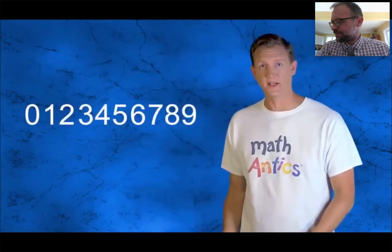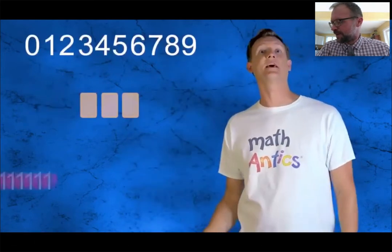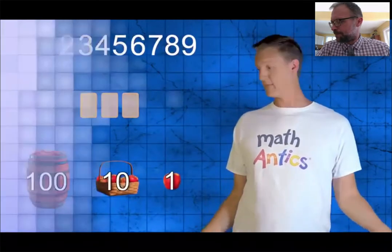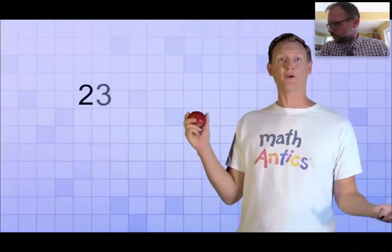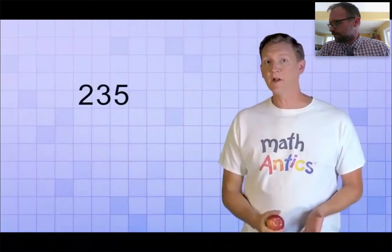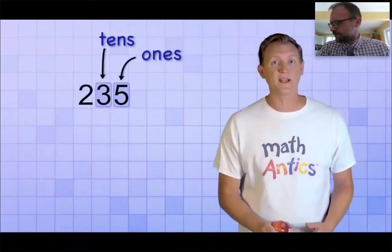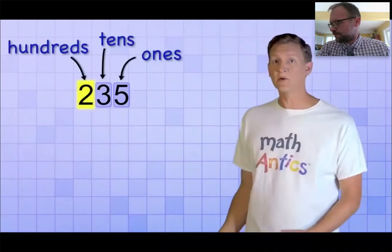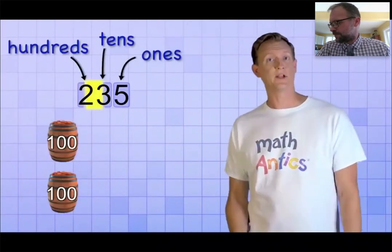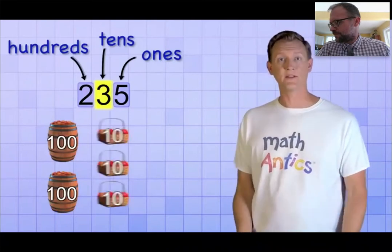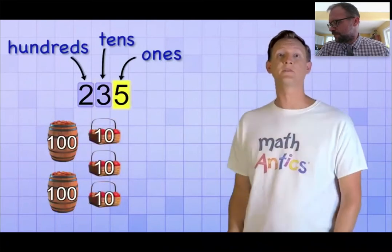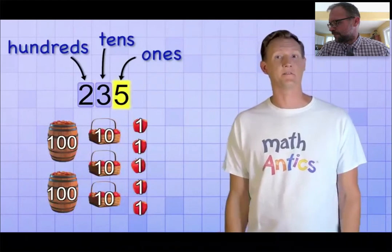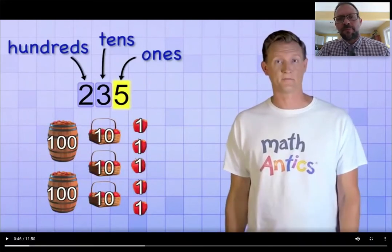In a previous video, we learned how to count using just ten different digits and number places that represent different sized groups. For example, if we needed to count 235 apples, we use different number places for counting by ones, by groups of ten, and by groups of a hundred. The digit two in the hundreds place represents two hundreds. The three in the tens place represents three tens, or 30. And the five in the ones place represents five ones, or just five. That sounds familiar, doesn't it? Place value.